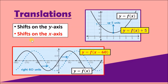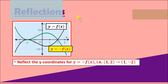For shifting on the x-axis, the whole graph moves left or right. Notice the notation: if you have a negative sign you do the opposite. If it's f(x - 5), you move to the right; if it's f(x + 6), you move to the left. That's translations covered.